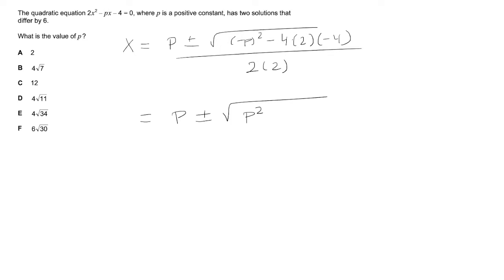Now, -4 times 2 is -8, times -4 is 32, and 2 times 2 is 4.